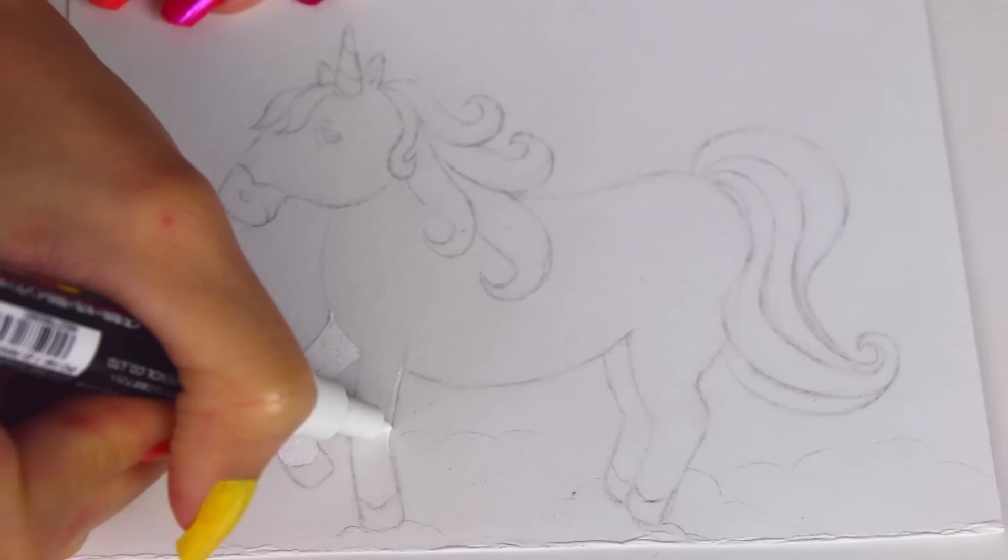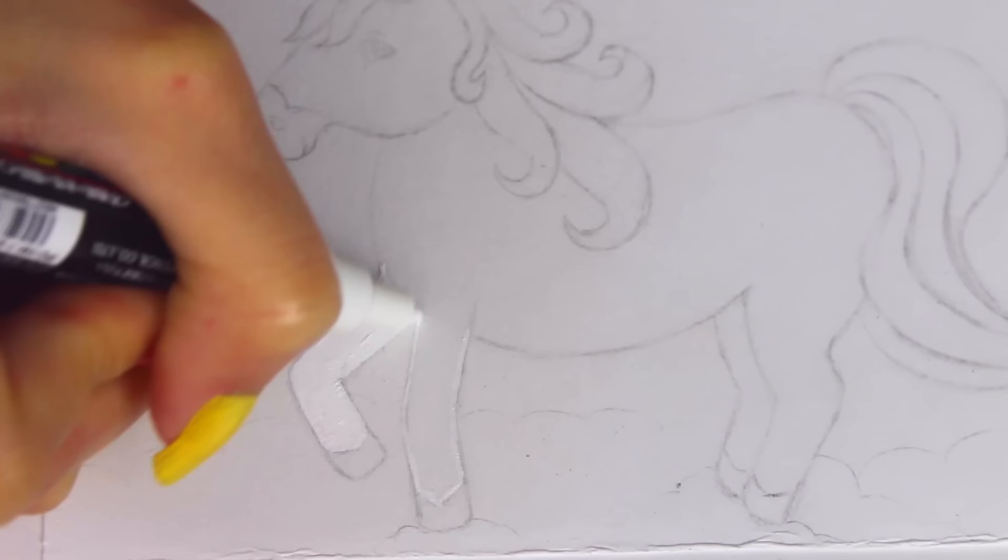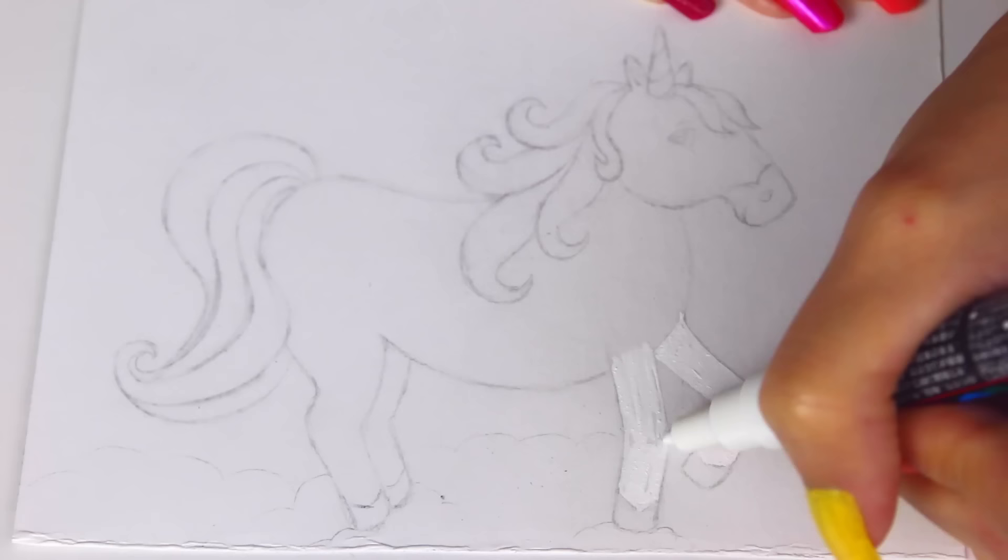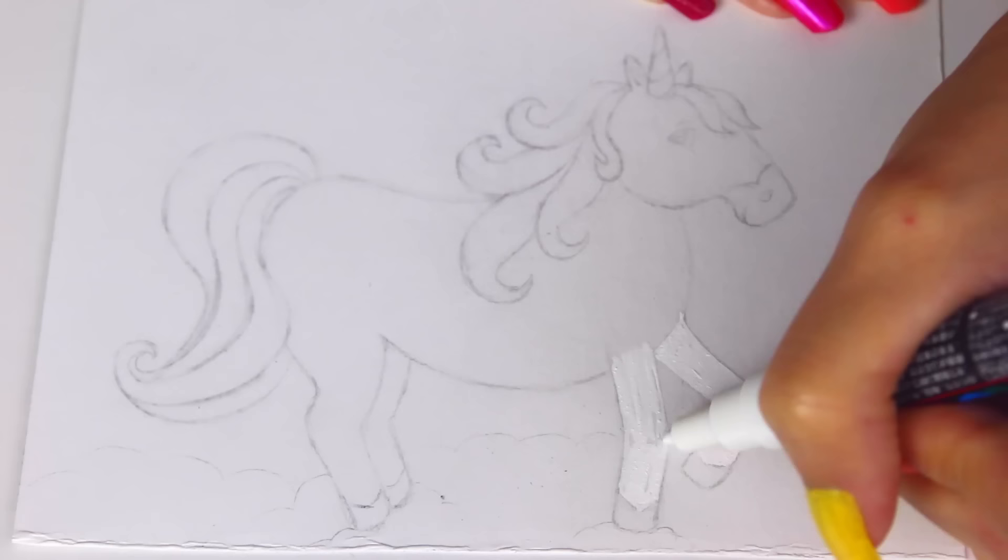And even though the paper is white, it's kind of an off-white and more of a cool tone than the Posca pen. So I am coloring the entire unicorn body in with the white Posca pen. If I didn't do this, it just wouldn't look finished. I don't like having blank paper spots. I don't know. It just looks like I forgot to color something in.